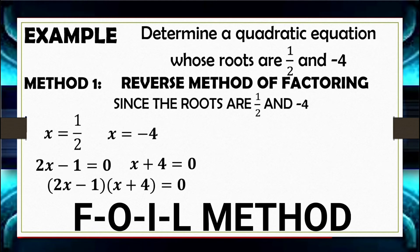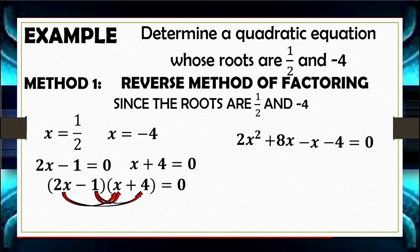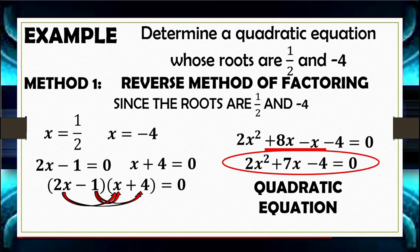Applying the FOIL method: 2X times X is 2X squared, 2X times 4 is 8X, negative 1 times X is negative X, and negative 1 times 4 is negative 4. Combining linear terms 8X and negative X gives positive 7X. So written in standard form, the quadratic equation is 2X squared plus 7X minus 4 equals 0.